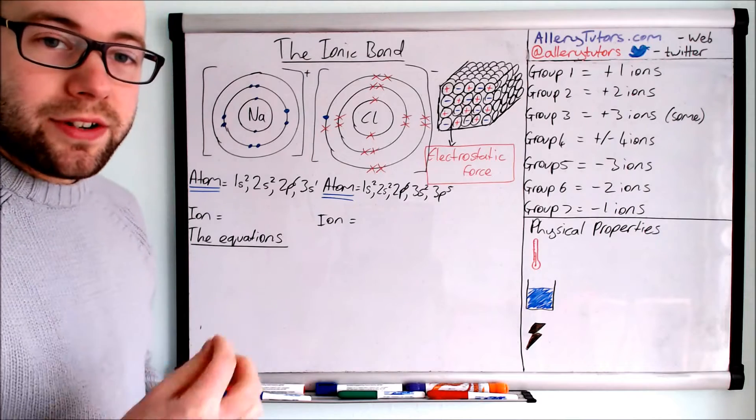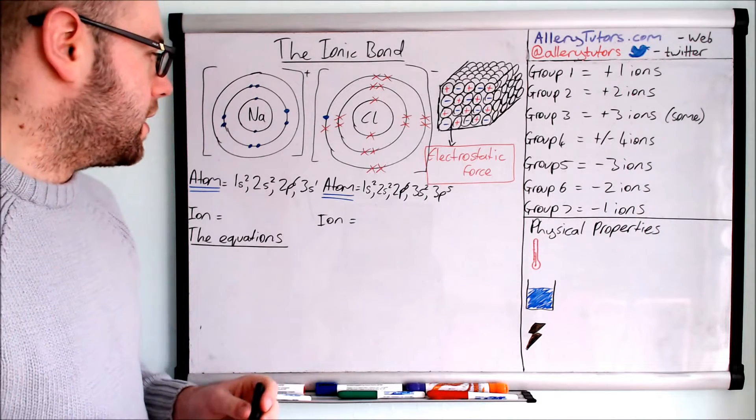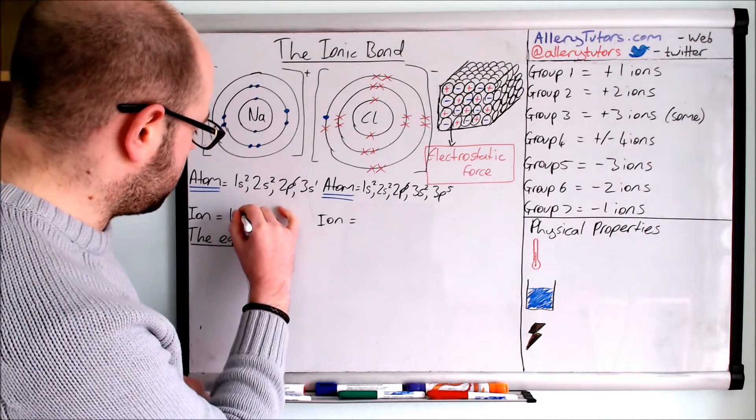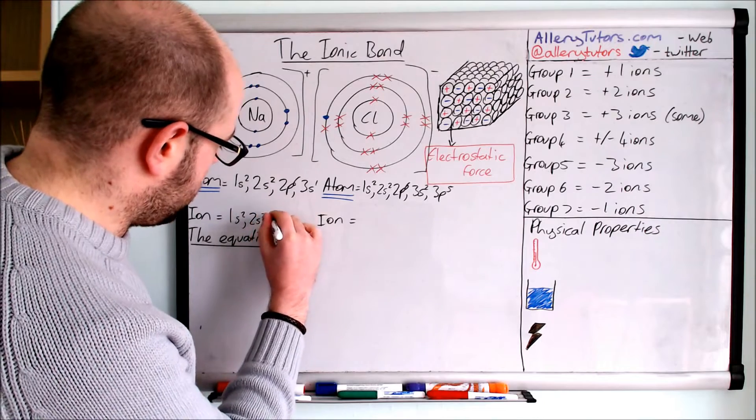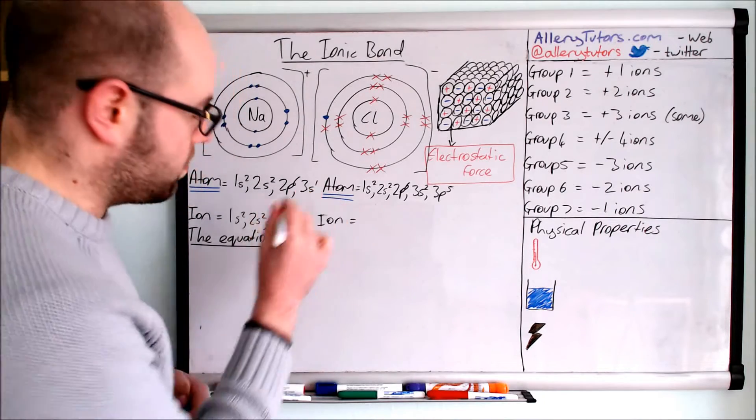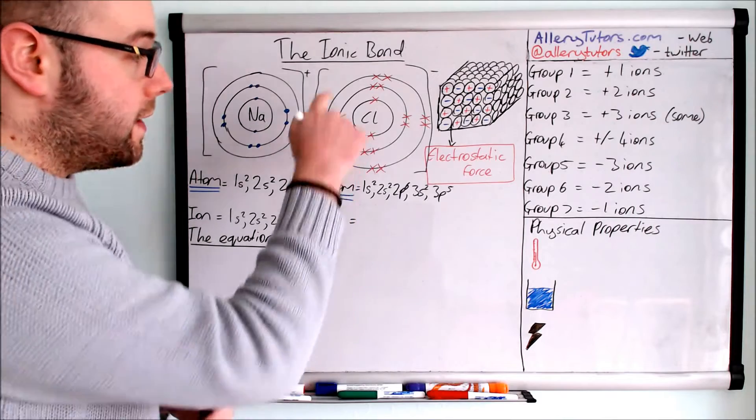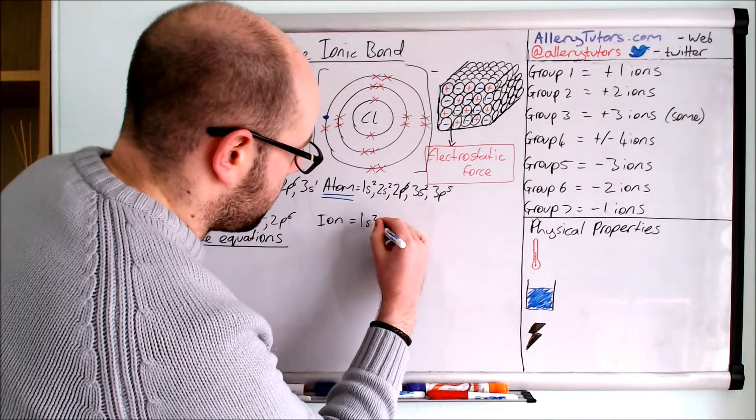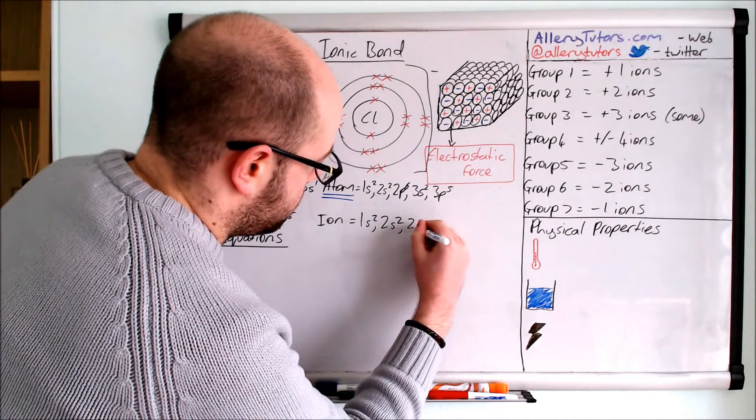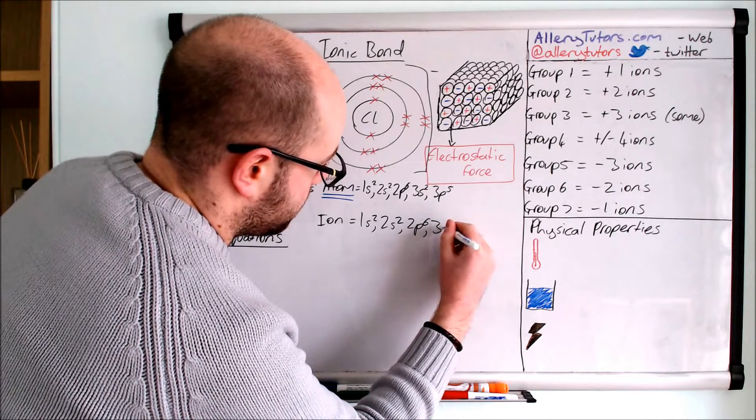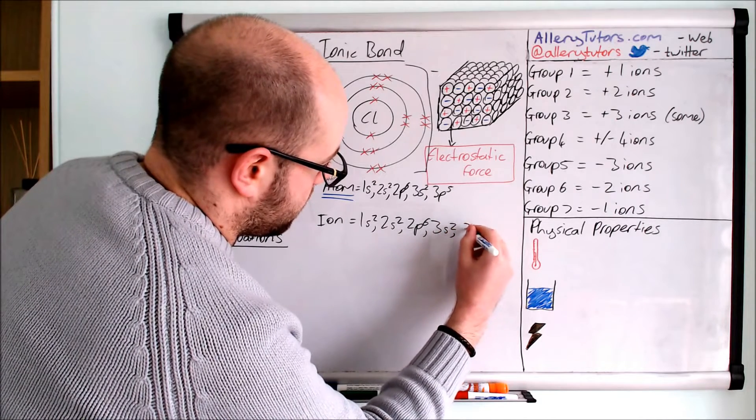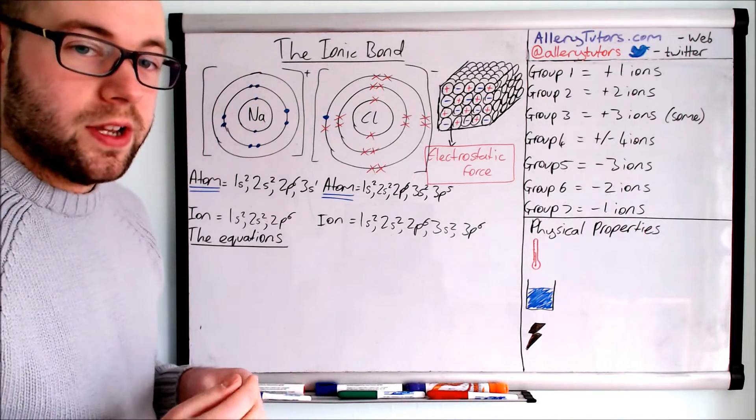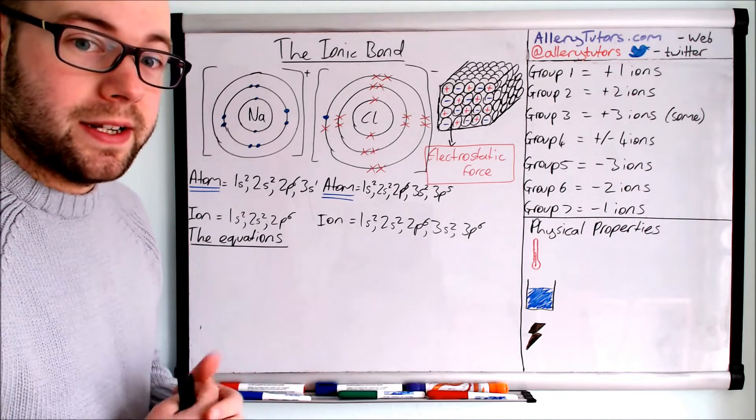So we'll just go through the electron configuration of these now for the ion. You can see here that we've lost the electron from sodium. So the electron configuration here is 1s2, 2s2 and 2p6. The 3s1 goes because we've lost it from the outer shell. The chlorine one has gained the electron. It's now negatively charged. So this is going to be 1s2, 2s2, 2p6, 3s2, 3p6. That's got a full shell, very stable configuration, so the ion is stable.